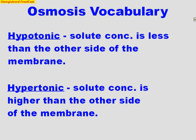Looking at some vocabulary relating to osmosis: hypotonic and hypertonic. These words are both adjectives that describe solutions. Hypotonic describes a solution whose solute concentration is less than the other side of the membrane — either inside or outside of the cell. A hypertonic solution is one whose solute concentration is higher than the other side of the membrane. Think 'hyper' — hyperactive, more than. 'Hypo' — think low, less than. These are adjectives that describe the solute concentration of a solution.